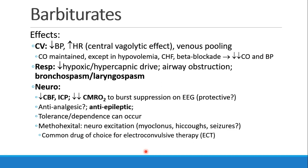Barbiturates will cause a decrease in blood pressure, although perhaps not as profound as with propofol. You will see an increase in heart rate, and there seems to be some central vagolytic effect that causes patients to become tachycardic with barbiturates. We also see venous pooling from some vasodilation. Cardiac output is usually maintained unless patients are very hypovolemic, have significant heart failure, or beta blockade, at which point cardiac output and blood pressure can drop quite significantly.